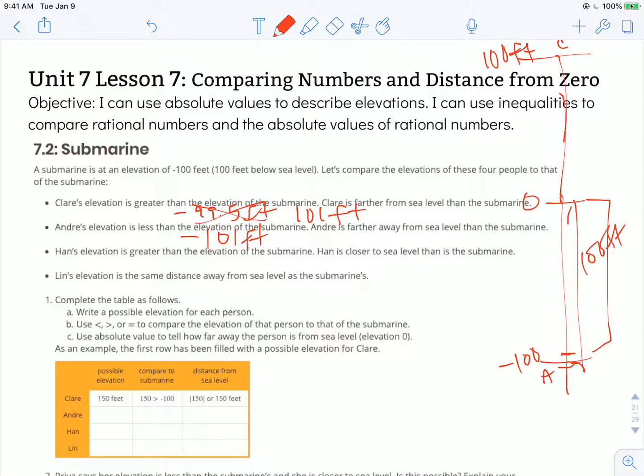Han's elevation is greater than the elevation of the submarine. Han is closer to sea level than the submarine. So Han could be anywhere right here, anywhere between negative 100 and zero. But he also could be anywhere between zero and positive 100.